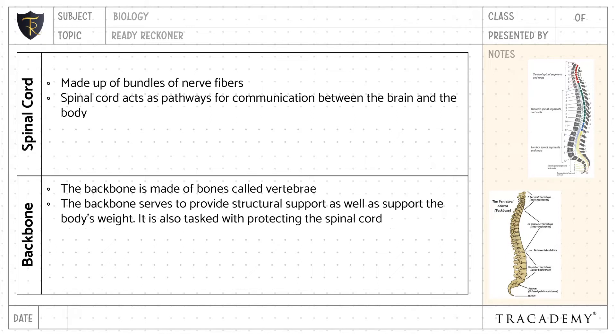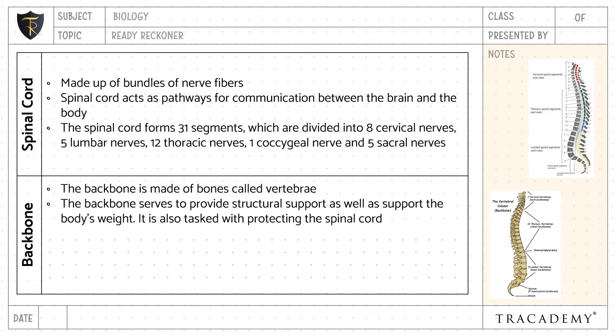The backbone is also tasked with protecting the spinal cord. The spinal cord forms 31 segments, which are divided into eight cervical nerves, 12 thoracic nerves, five lumbar nerves, five sacral nerves, and one coccygeal nerve.